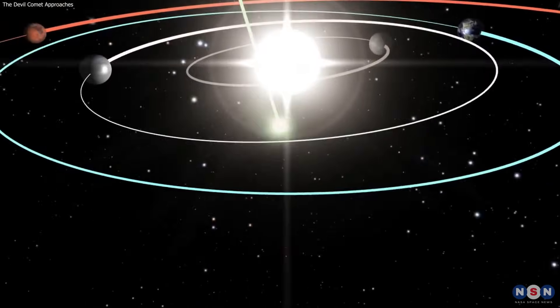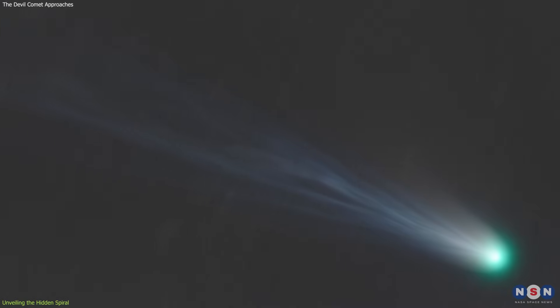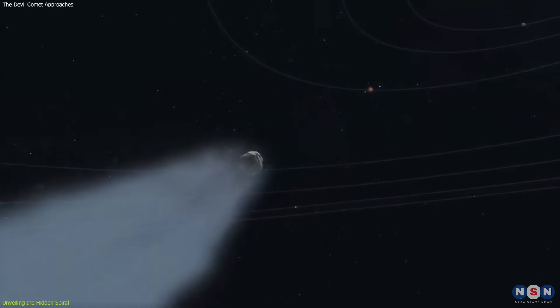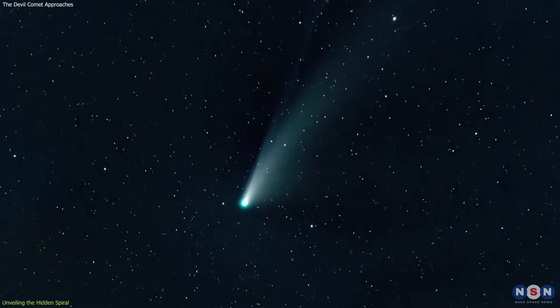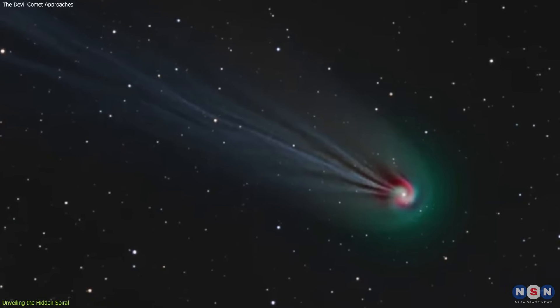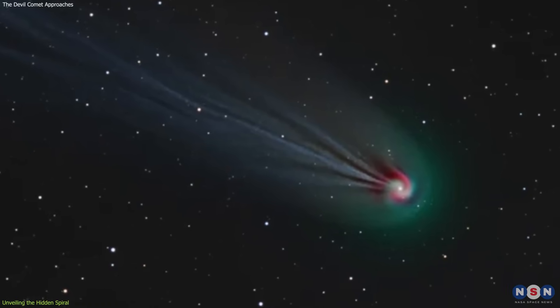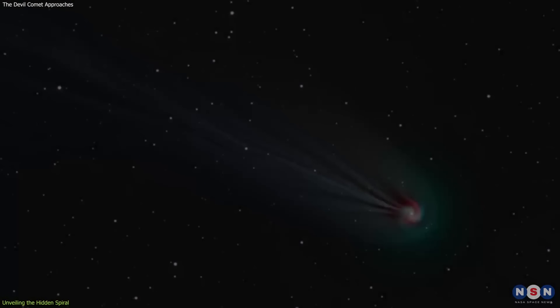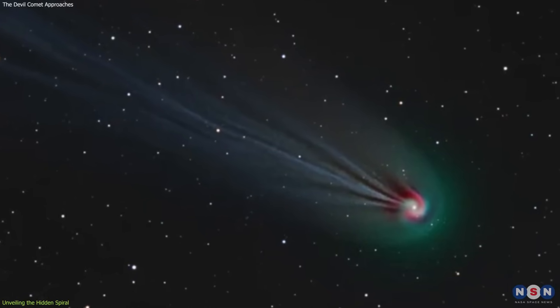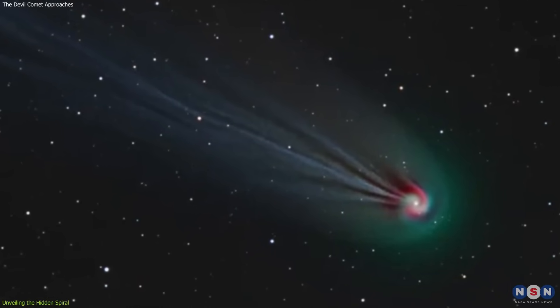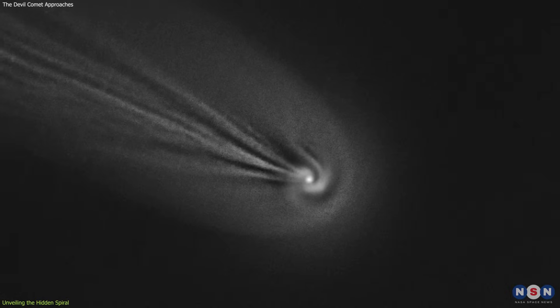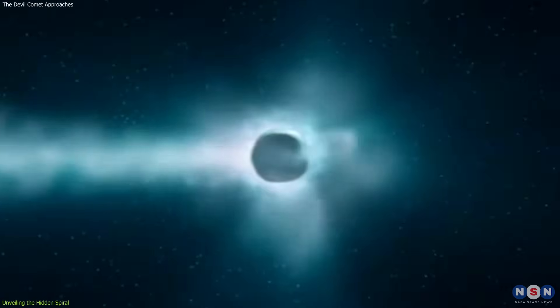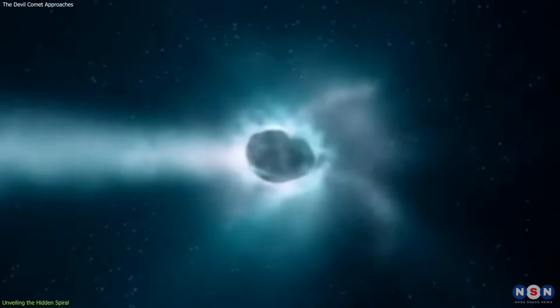As the Devil Comet draws closer to the sun, its green-hued coma becomes increasingly visible. This celestial phenomenon is rich in dicarbon, a molecule that gives the coma its distinctive color. However, the most striking discovery in recent observations is the hidden spiral swirling within the comet's coma. High-resolution images captured by astrophotographers have unveiled this previously unseen spiral, a testament to the advancements in astronomical imaging technology. This spiral is not just a random pattern, it is a manifestation of the dynamic processes occurring on the comet's surface.